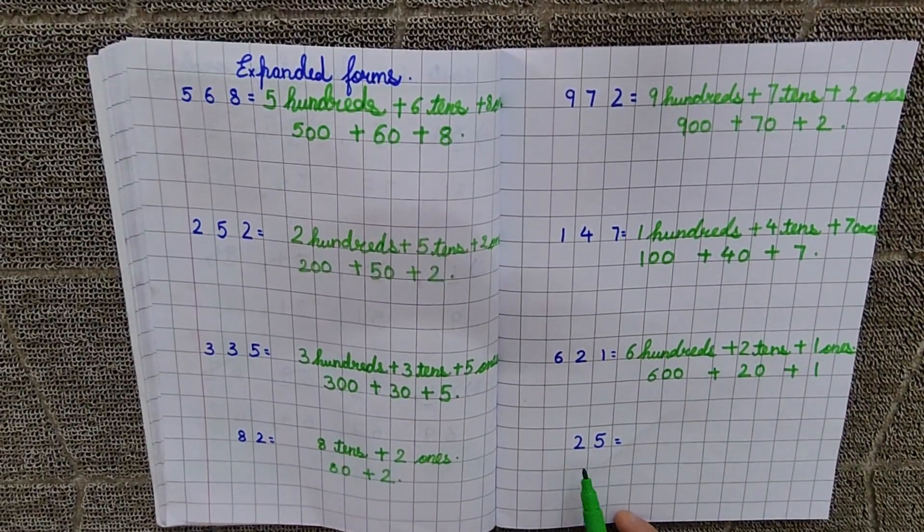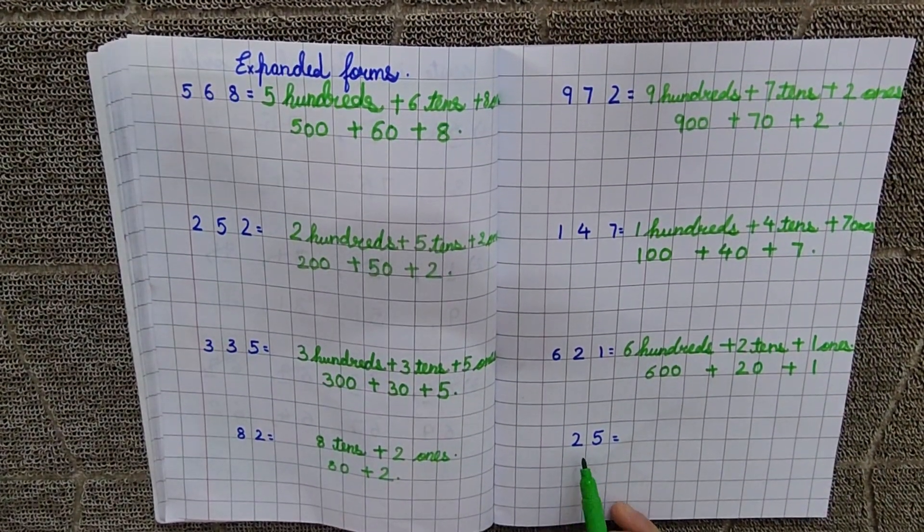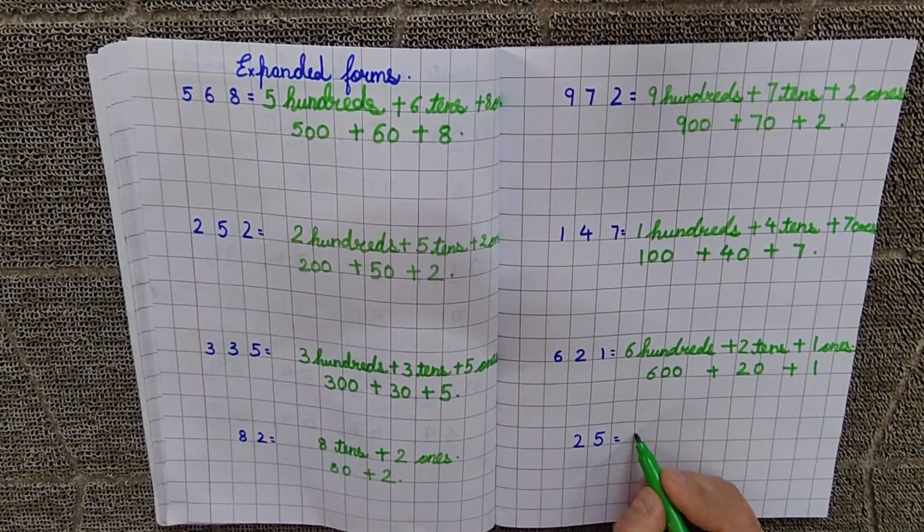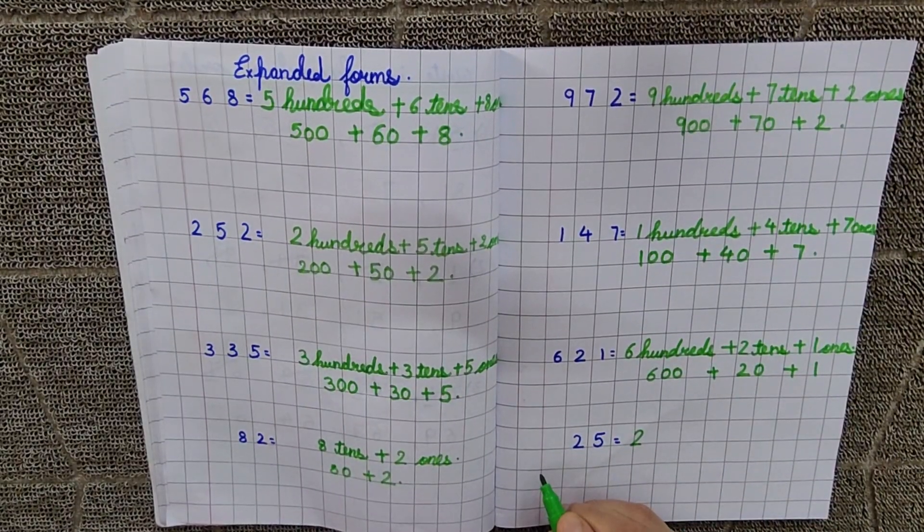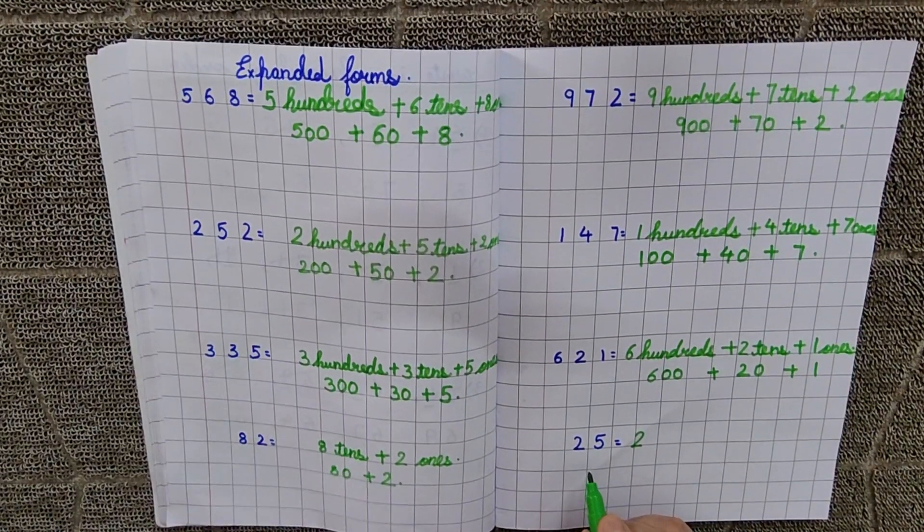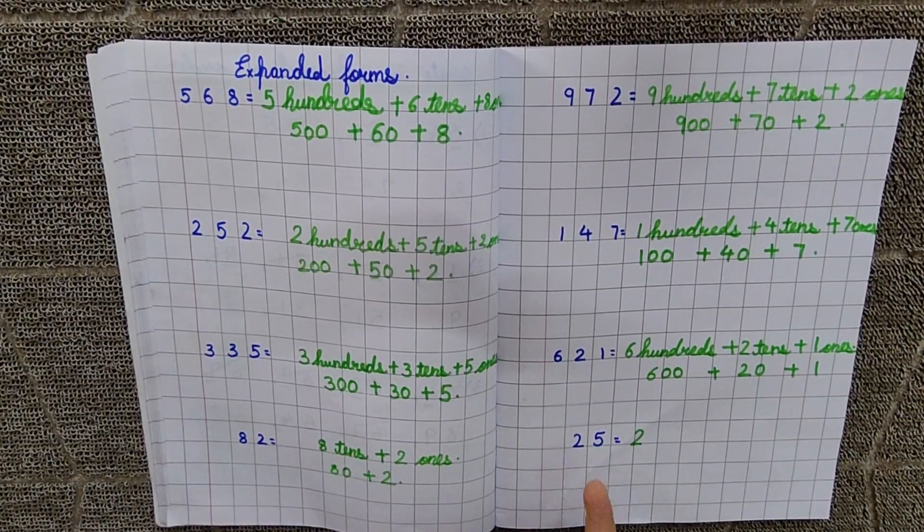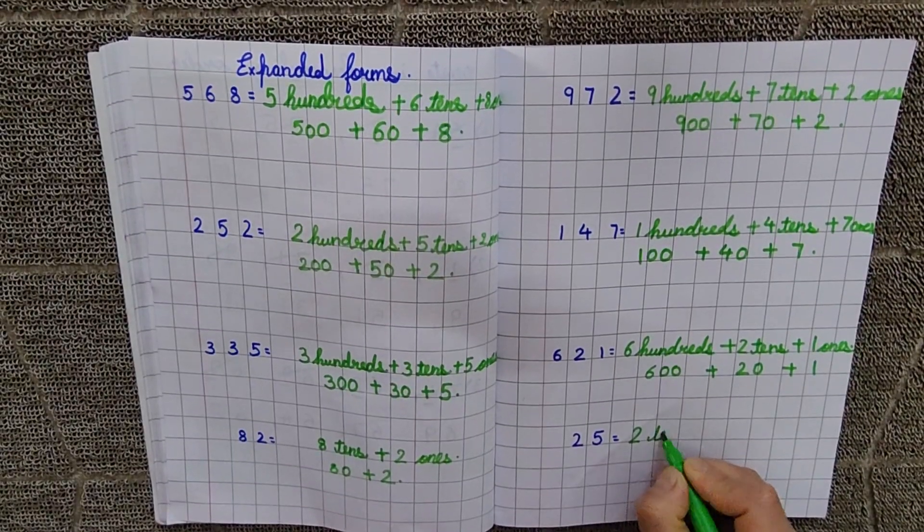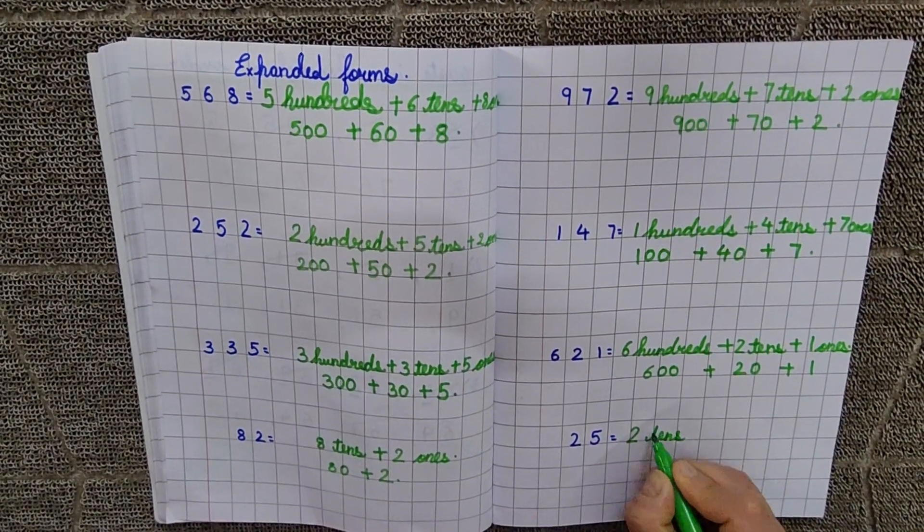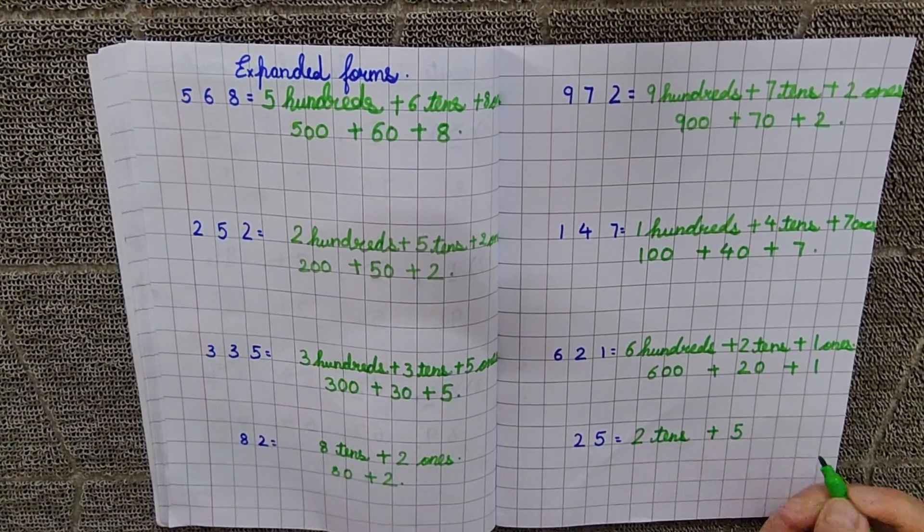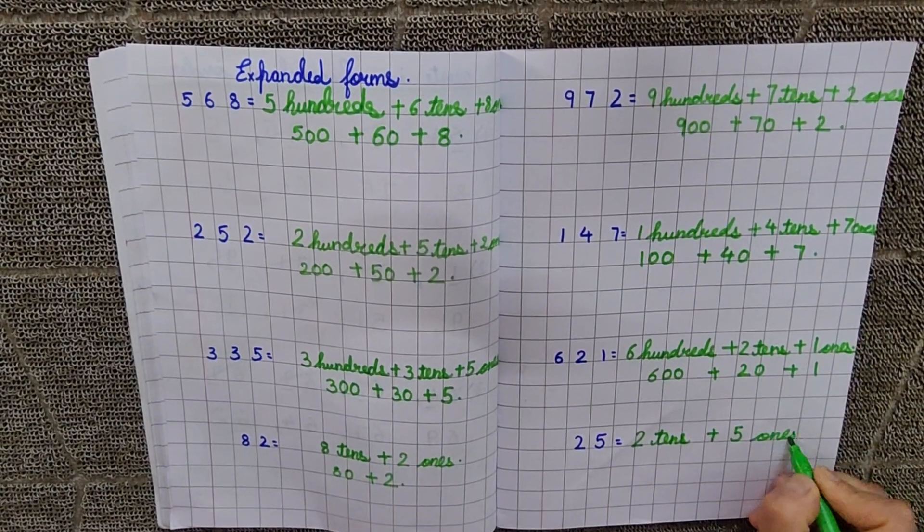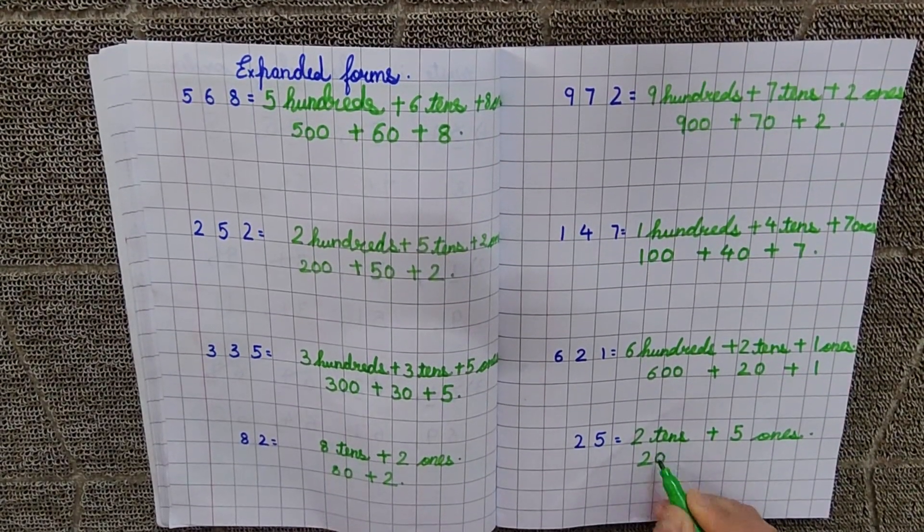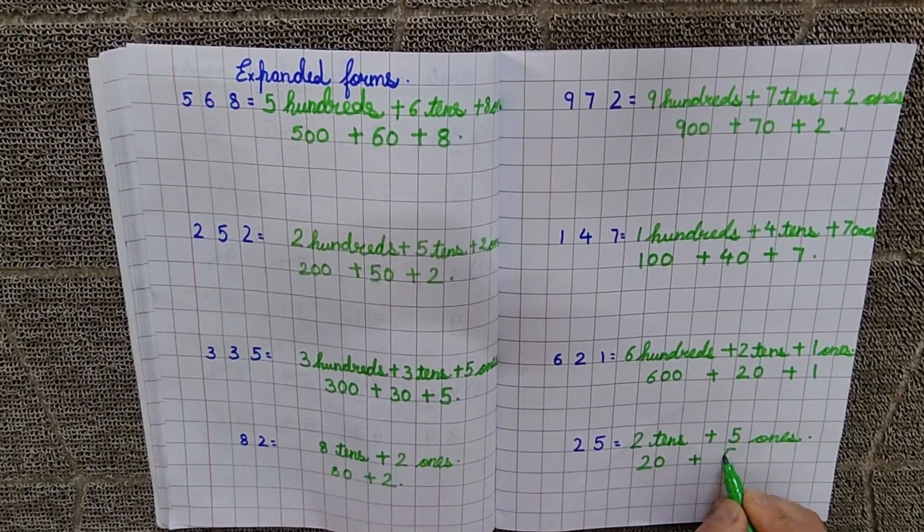Next is 25. Now, what, kaisi likhenge hain isse? 2 tens. Not hundreds. Right? Because it's a 2 digit number. Right? So, this is in the tens place. 2 is sitting on the tens place. So, 2 tens plus 5 ones. Now, how many zeros of tens? 1, 0. 20 plus 5.